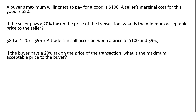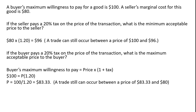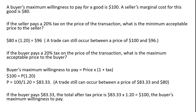If the buyer pays a 20% tax on the price of this transaction, what is the maximum acceptable price to the buyer? The buyer's maximum willingness to pay equals the price times 1 plus the tax. So $100 equals P times 1.2. Solving for P by dividing by 1.2, the price is $83.33. A trade can still occur between a price of $83.33 and the seller's marginal cost of $80. If the buyer pays $83.33, the total after-tax price is $100, the buyer's maximum willingness to pay.